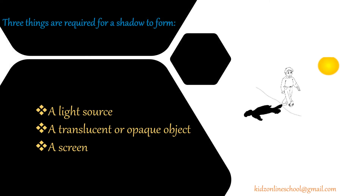These things are required for a shadow to form: a light source, a translucent or opaque object, and a screen.